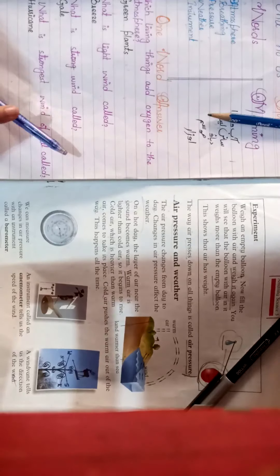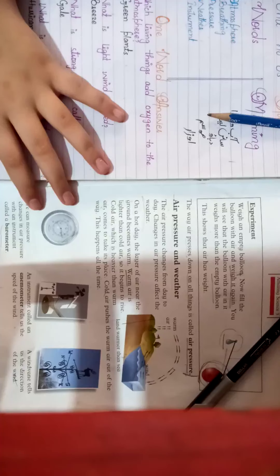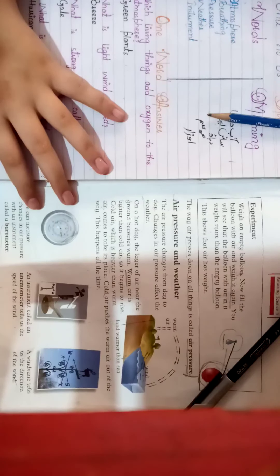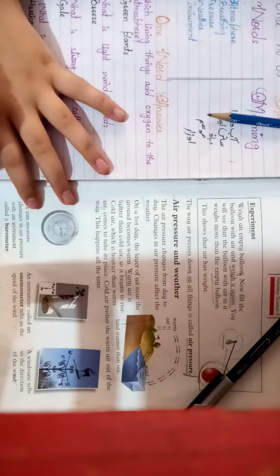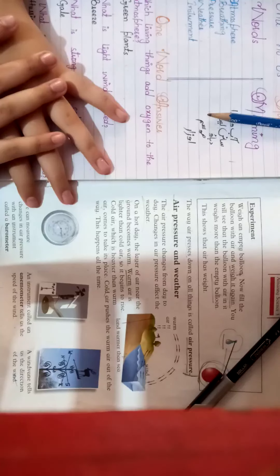On a hot day, there is a layer of air near the ground that becomes warm. Warm air is lighter than cold air. Warm air is light and it rises.